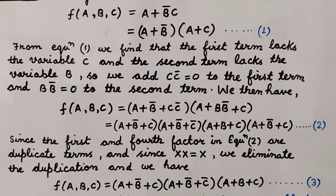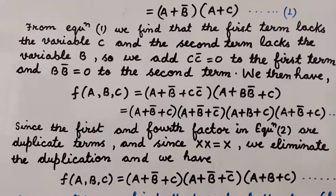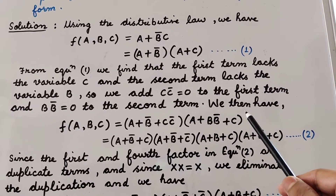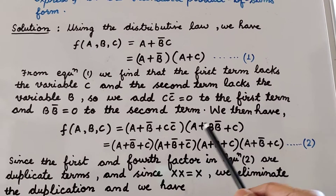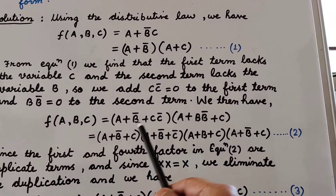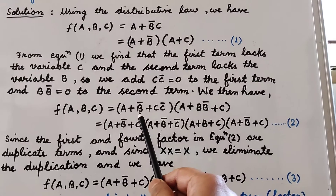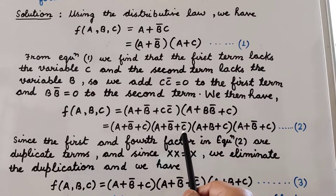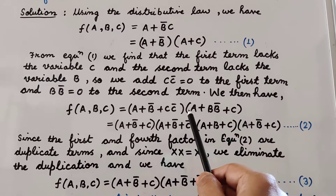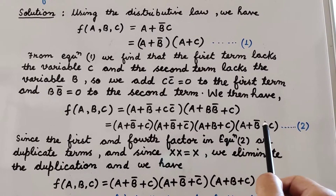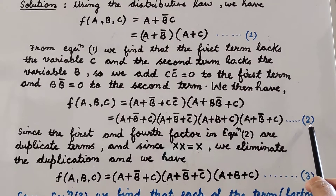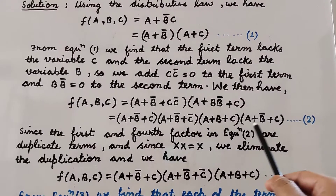After adding cc' to the first term and bb' to the second term, the function becomes (a + b' + cc')(a + bb' + c). Now applying the distributive law again to this expression, we get: (a + b' + c)(a + b' + c')(a + b + c)(a + b' + c). This is equation number 2.